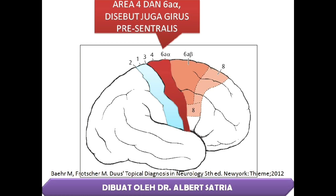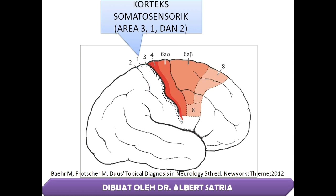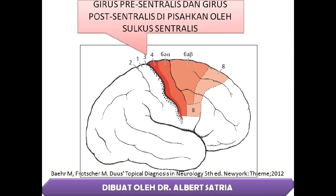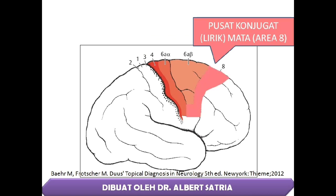Area Cortex 4 dan 6A Alpha disebut juga dengan girus presentralis. Ini area Cortex Somatosensorik atau area Broadman 3, 1, dan 2. Cortex Somatosensorik ini disebut juga dengan girus posentralis. Girus presentralis dan girus posentralis dipisahkan oleh sulcus centralis.